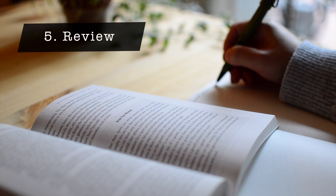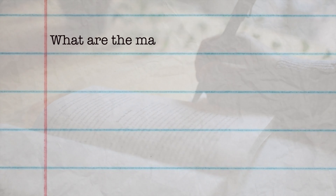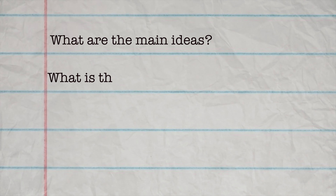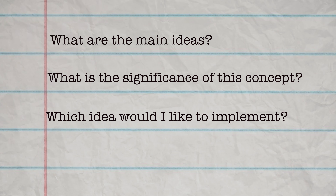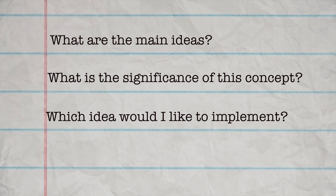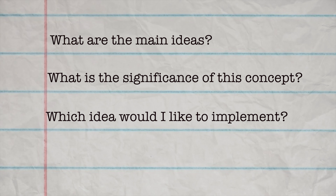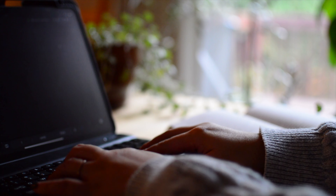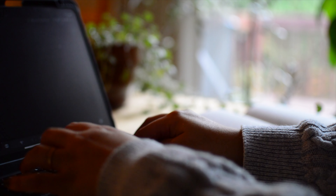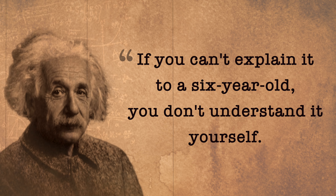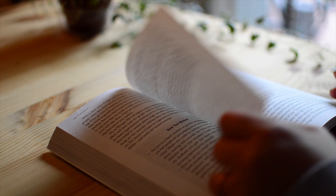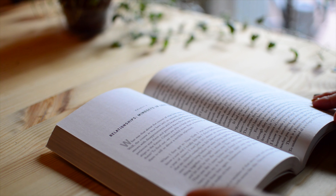Some questions to consider during the Review step are: What are the main ideas? What is the significance of this concept? Which idea or concept would I like to implement right now? Whenever I write a summary, I try explaining the concept to a child in three sentences. As Einstein once said, 'If you can't explain it to a six-year-old, you don't understand it yourself.' So this is how you practice SQ3R.